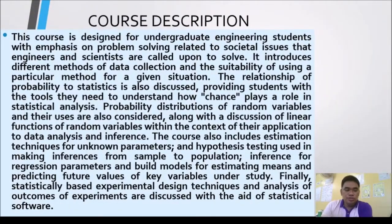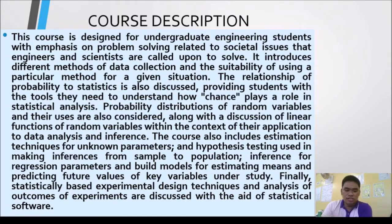The course is designed for undergraduate engineering students with emphasis on problem solving related to societal issues that engineers and scientists are called upon to solve. It introduces different methods of data collection and the suitability of using a particular method for a given situation. The relationship of probability to statistics is also discussed, providing students with the tools to understand how chance plays a role in statistical analysis. Probability distributions of random variables and their uses are also considered.